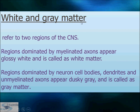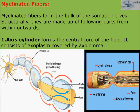White and gray matter refer to the two regions of the central nervous system. White matter is a region dominated by myelinated axons that appear glossy white; it is present in the center of the brain and is made up of myelinated nerve fibers. Gray matter forms the outer layer of the brain and is made up of cell bodies or cytons of the neurons — it is the region dominated by neuron cell bodies, dendrites, and unmyelinated axons, which appear dusky gray.